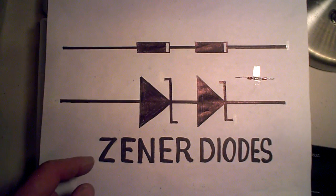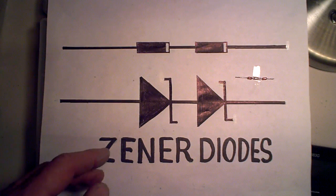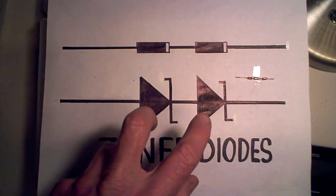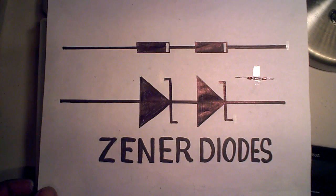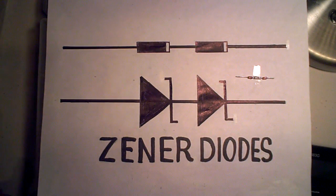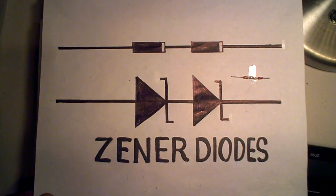For example, if I needed a 10 volt zener diode and all I had were two 5 volt zener diodes, I could combine them in series like this and I'd have the equivalent of a 10 volt zener diode. Or if I needed a 15 volt zener diode, I could put three of them in a series circuit, or more if necessary, to come up with the voltage I need.